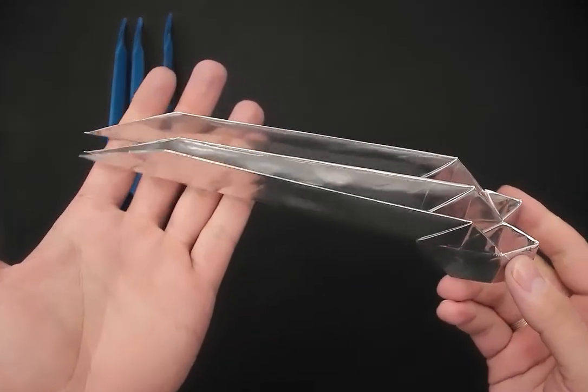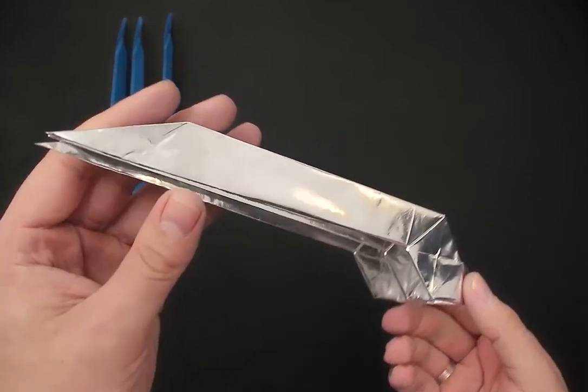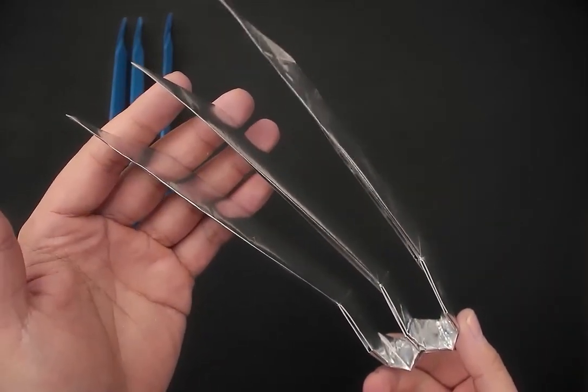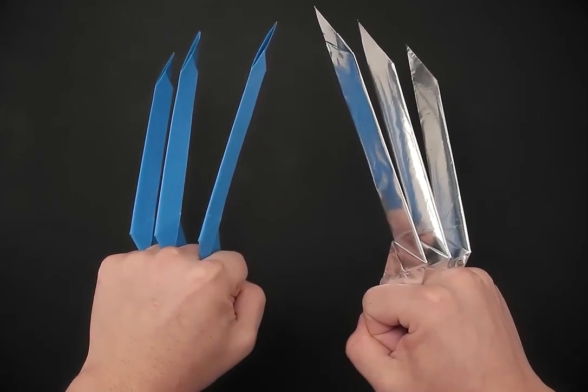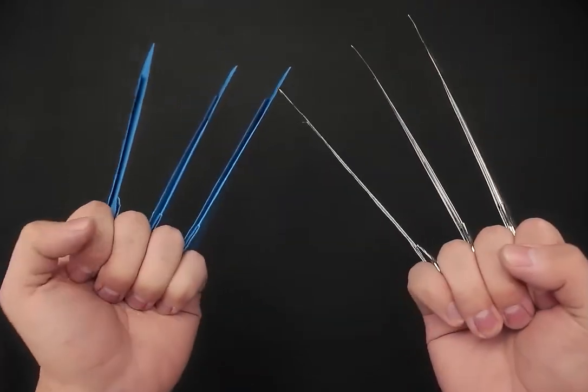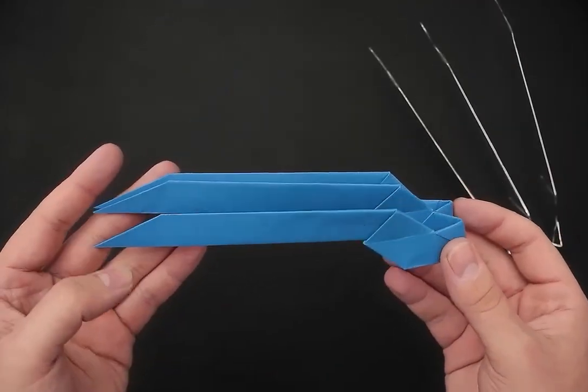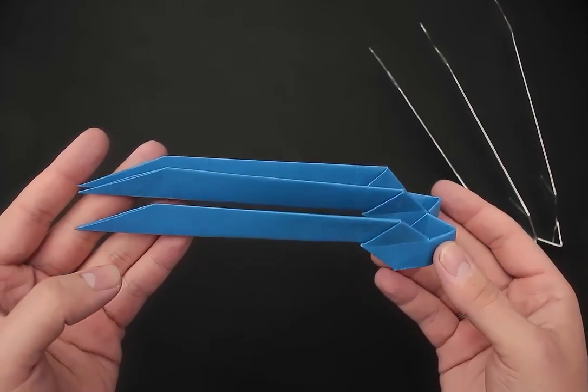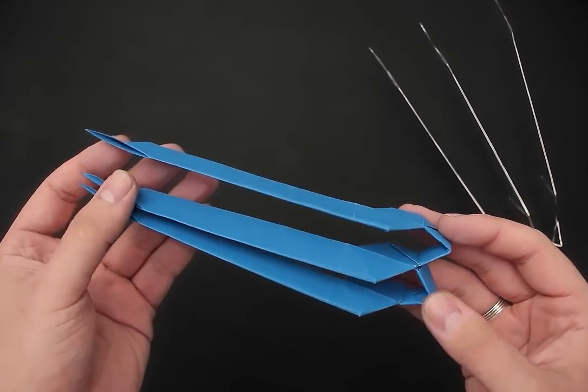In this silver model I used a metallic paper, that way I got a slightly more realistic result. But in this video I'm going to show you how to make it with a more common paper, like in this blue example here. The paper size depends on the size of your hand. I left more information about it in the description.